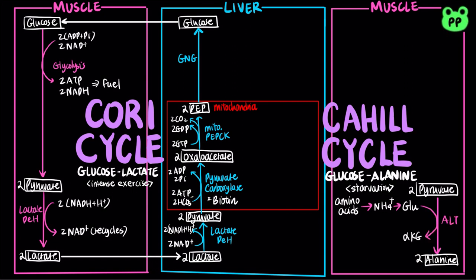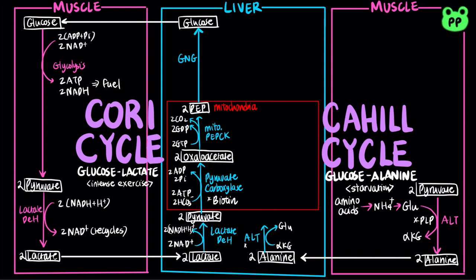The alanine formed passes into the blood and travels to the liver. In the cytosol of liver cells, alanine aminotransferase transfers the amino group from alanine to alpha-ketoglutarate, forming pyruvate and glutamate. The ammonia from glutamate is excreted by the urea cycle.